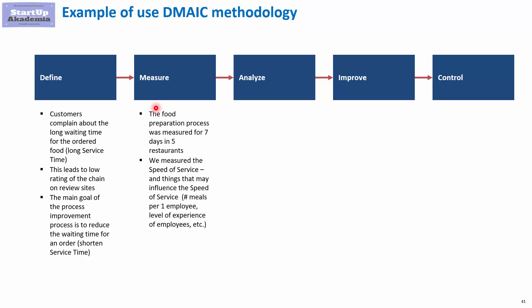In the Measure stage, we defined where and how to gather data. We gathered data for seven days across five restaurants, measuring speed of service — the service time — and things that might be influencing it: number of meals per one employee, level of experience of employees, and similar variables.